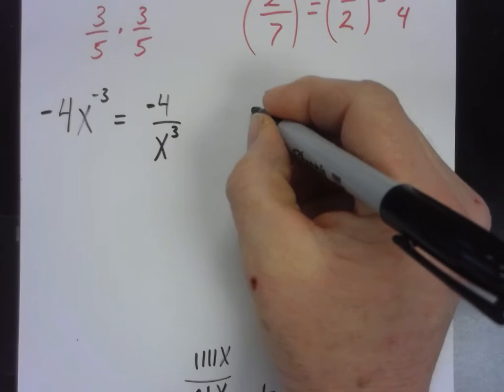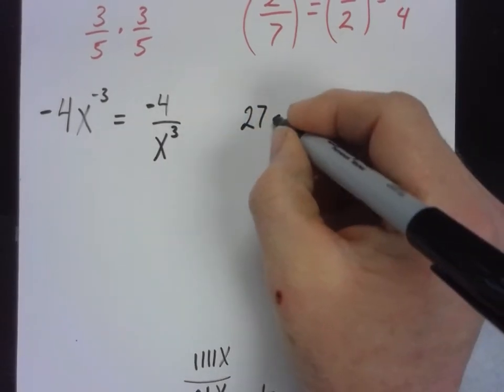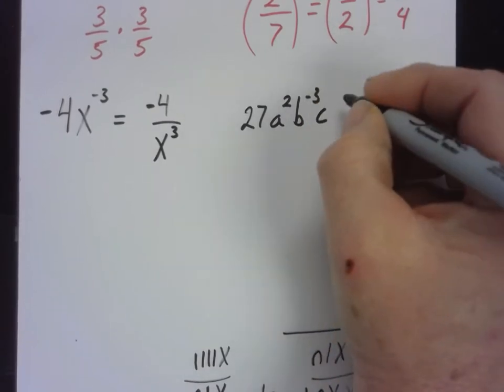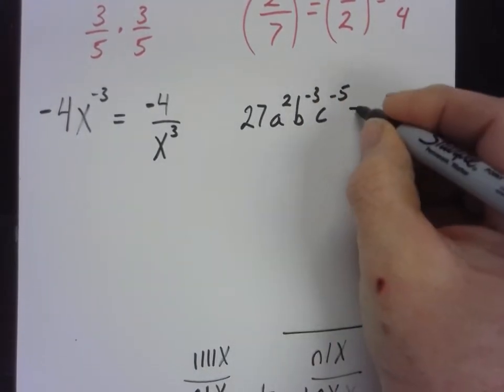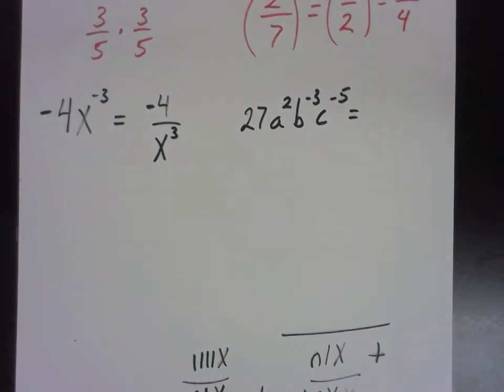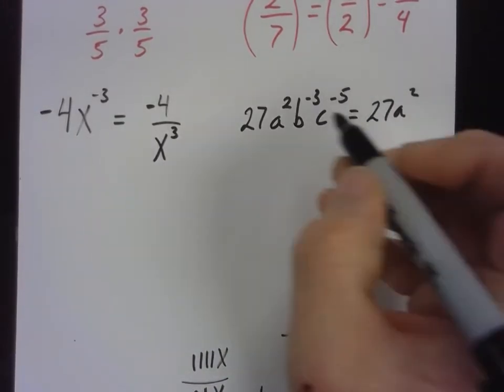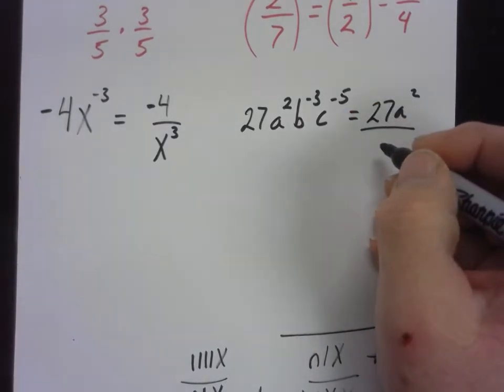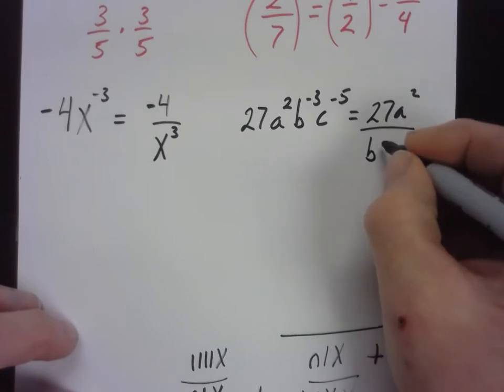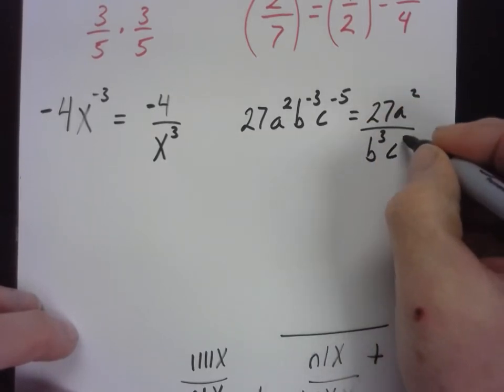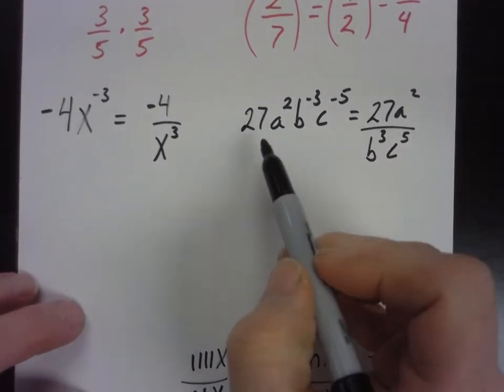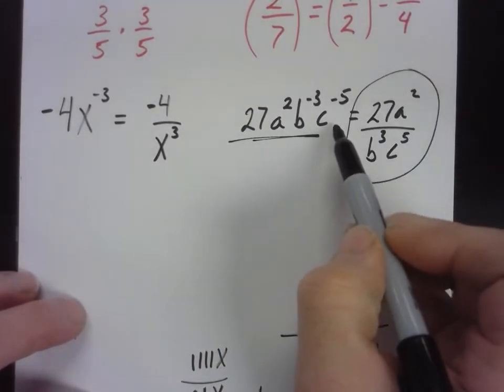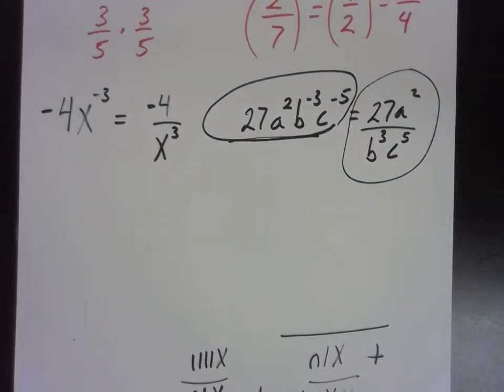What if this said four x to the negative three? Where would the four go? Does it move down too? Or does it stay up on top? It stays on top. Has nothing to do with moving the x down. You can move the variables down independently. And that constant is just going to stay just like that. Even if this were a negative four out in front, it would still be the opposite of four over x to the negative three. If I had 27a squared b to the negative three times c to the negative five, could we write that so it had all positive exponents? We can take 27a squared. That already has positive exponents. The b, where does it go? Denominator. So b to the third. And then we can move the c down, c to the fifth.